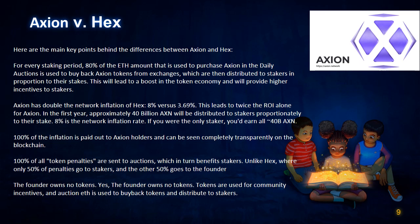Here are the main key differences between Axion and HEX. For every staking period, 80% of the ETH used to purchase Axion in the daily auctions is used to buy back Axion tokens from exchanges, which are then distributed to stakers in proportion to their stakes. This will lead to a boost in the token economy and will provide higher incentives to stakers, leading to twice the ROI. In the first year, approximately 40 billion AXN will be distributed to stakers proportionately to their stake.